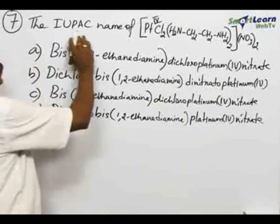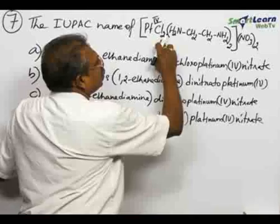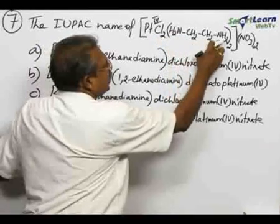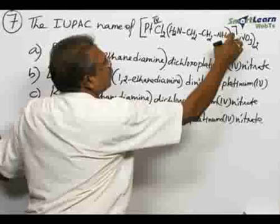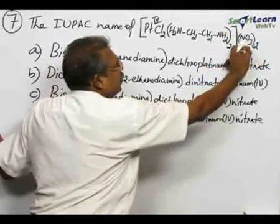Number 7, the IUPAC name of PtCl2, then that is En ligand, that is NH2-CH2-CH2-NH2, the whole twice, then square bracket over NO3 twice, that is the counter ion.